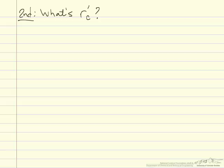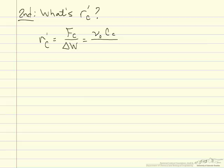To plot these values we need the actual numerical values of the rate of appearance of C. For our differential reactor, the design equation gives the rate of appearance of C as the molar flow rate of C divided by the weight of catalyst. The molar flow rate of C equals the volumetric flow rate times the concentration of C. We were given the initial volumetric flow rate, the concentration of C for each run, and the catalyst weight of 5 grams.